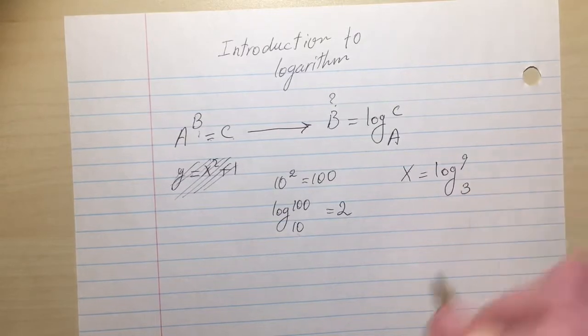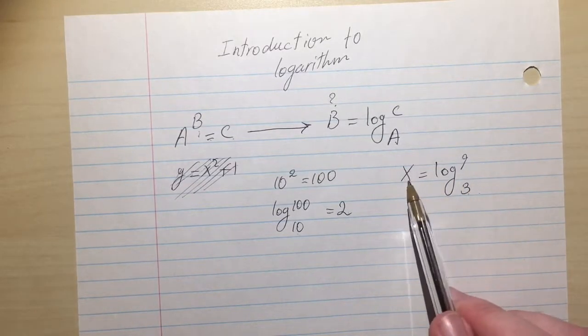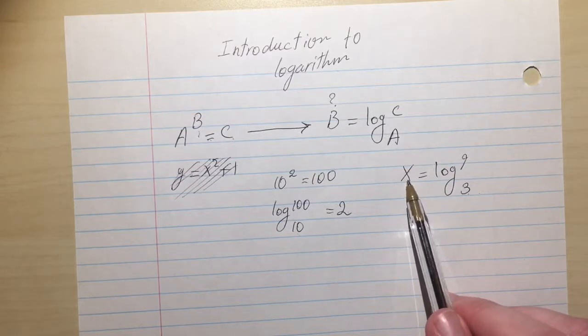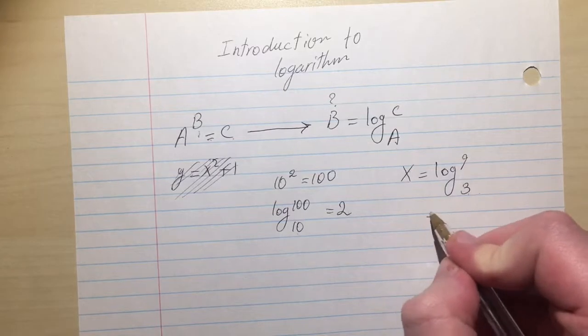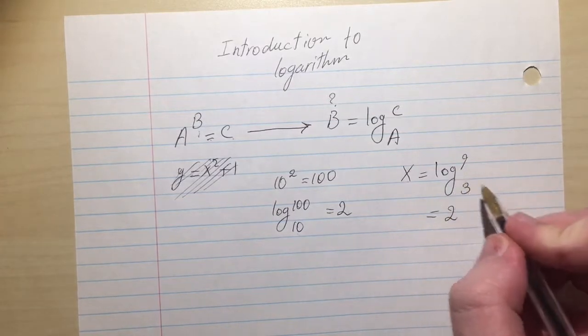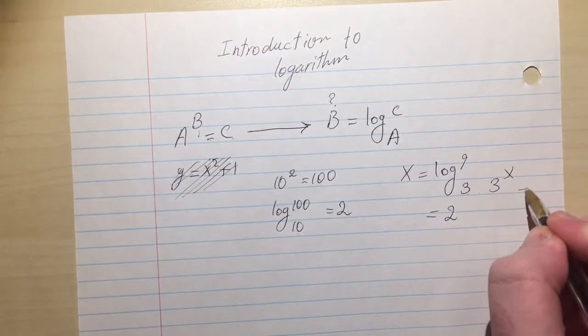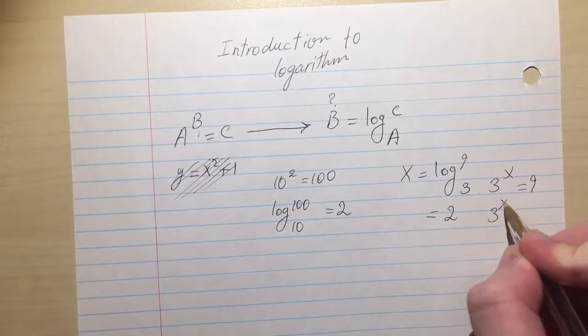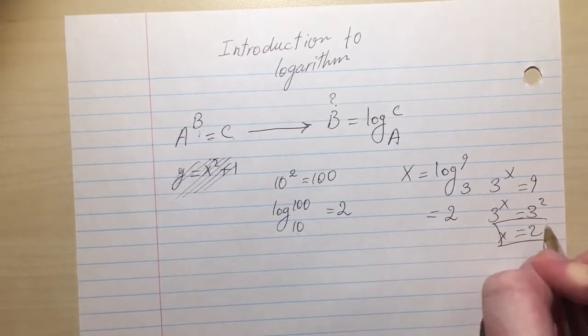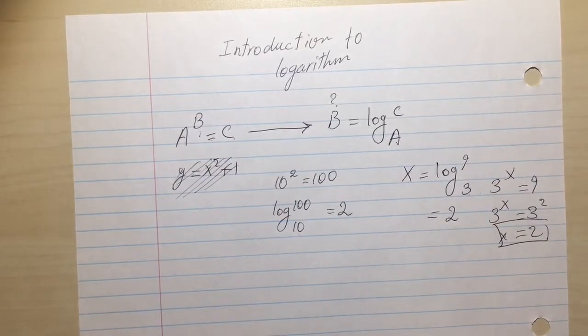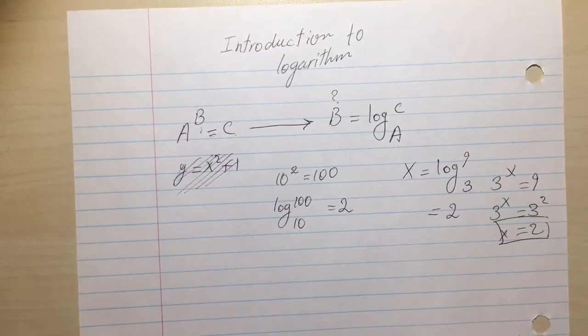For example, here is a question: X is equal to log 9 base 3. So you're saying 3 to what exponent makes it 9, and that's obviously 2. So you can rewrite this as 3 to the X equals to 9, 3 to the X equals to 3 to the 2, and X equals 2.